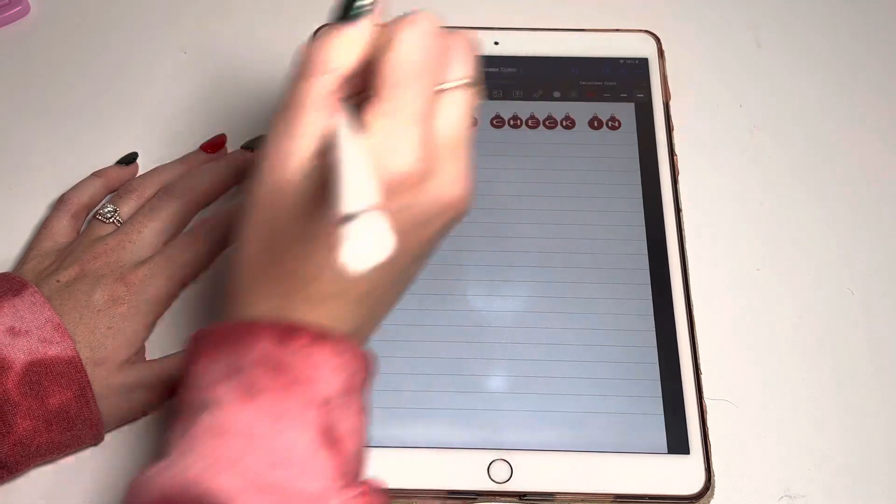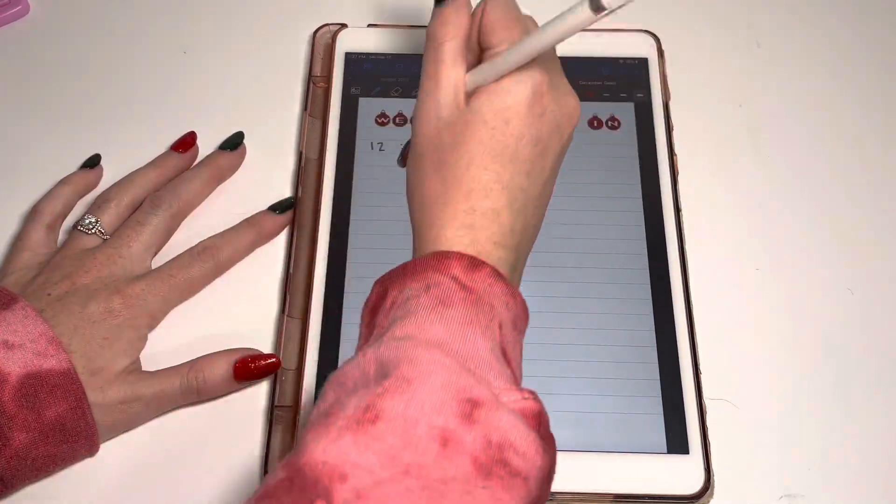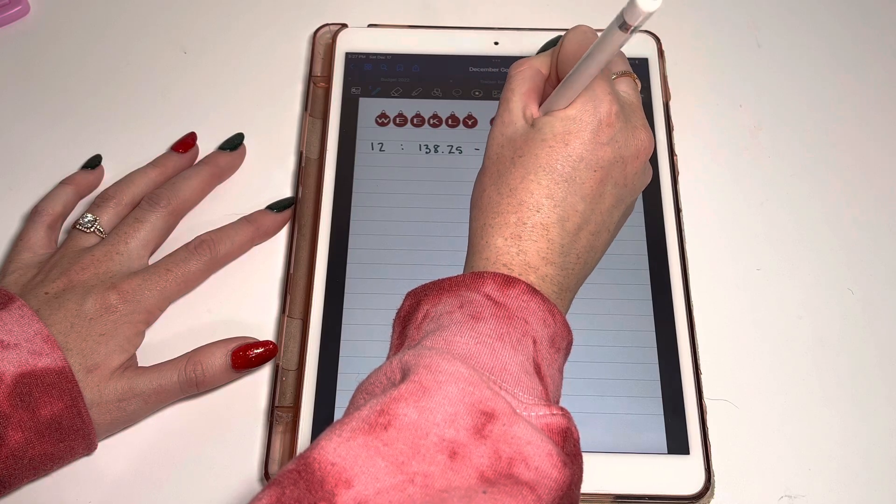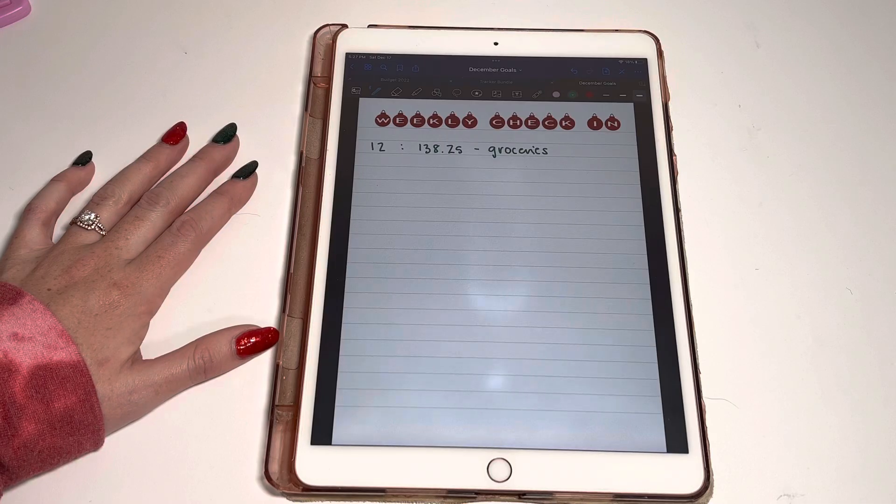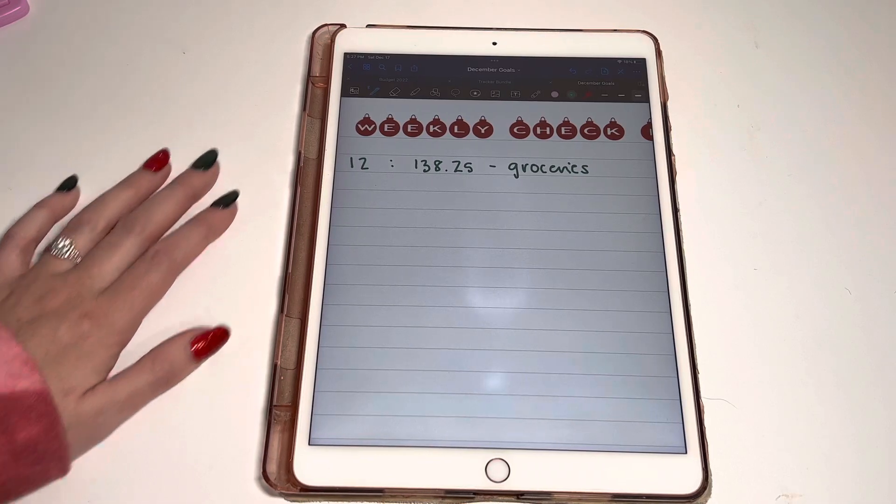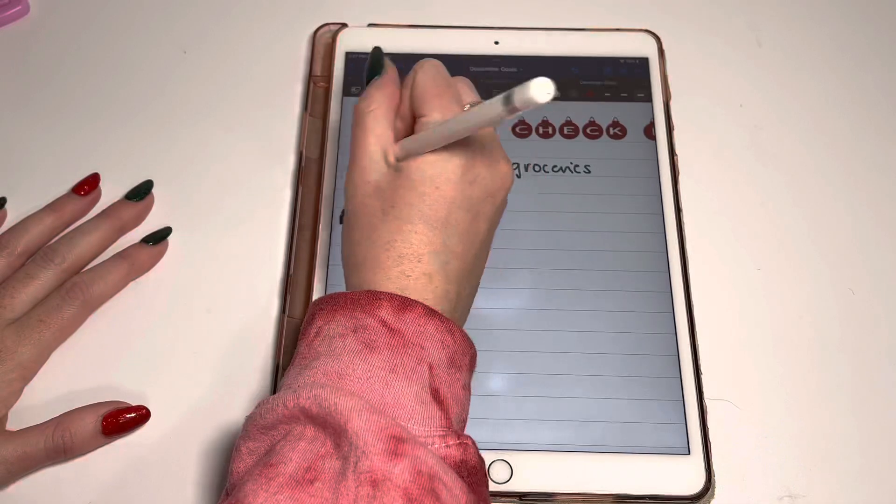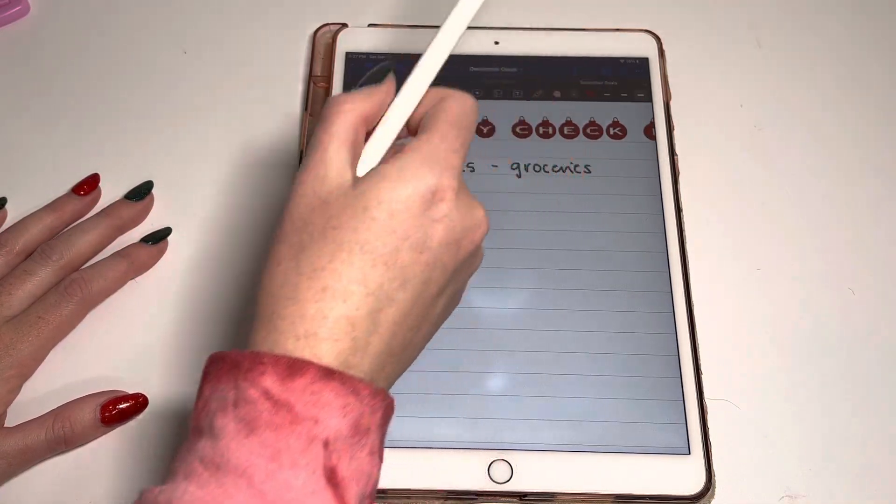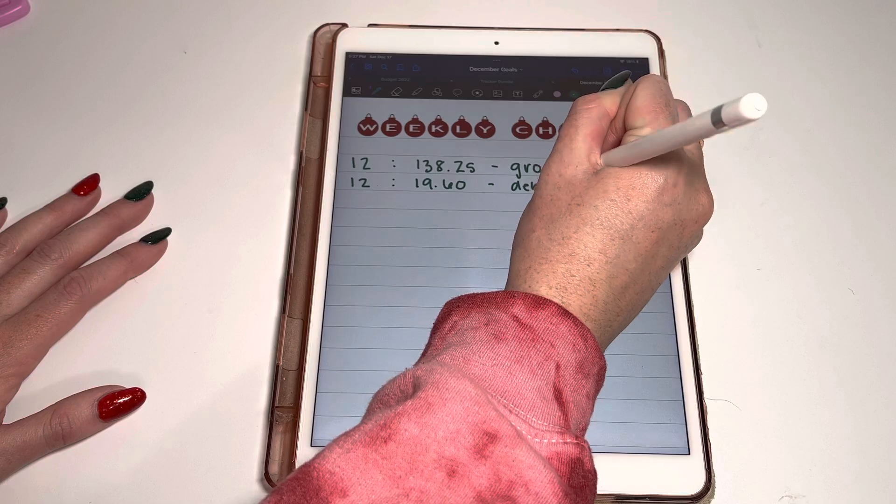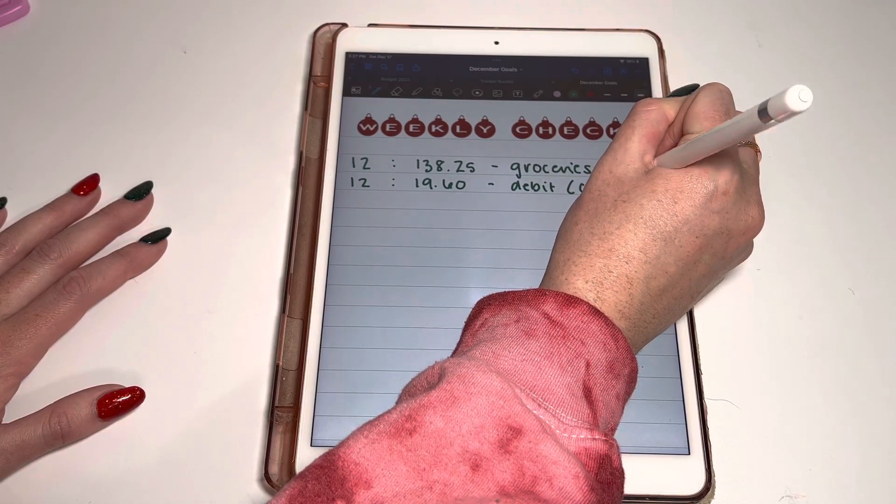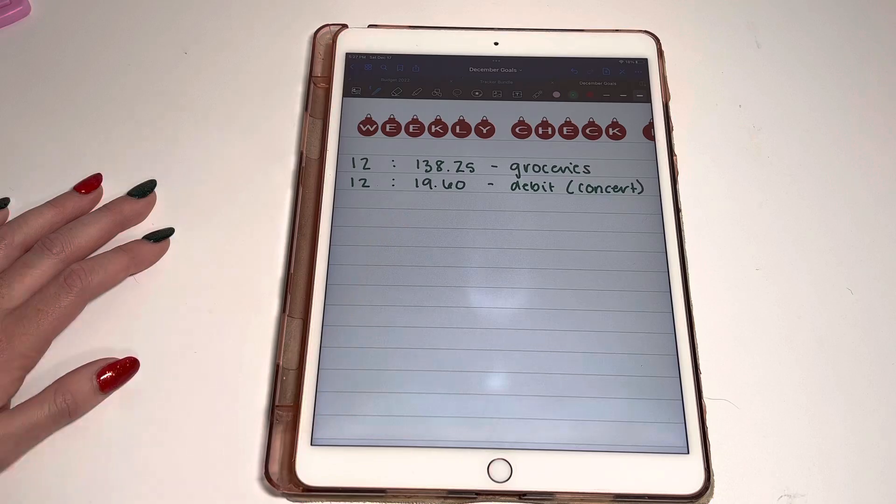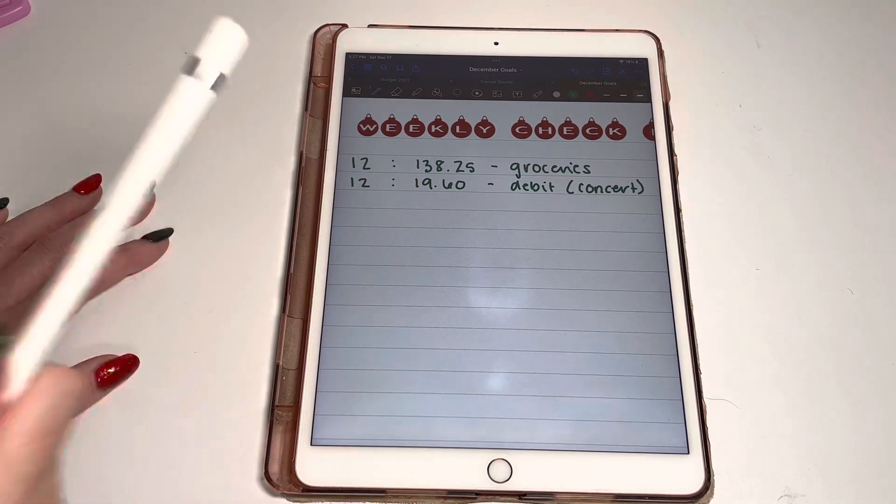On the 12th, I'm just gonna write the day because this is all December. We spent $138.25 on groceries, which I did talk about in my cash stuffing where I definitely overspent in this category. But you gotta do what you gotta do. There's nothing you can do about that. Also on the 12th, I spent $19.60 on my debit card for the concert. That was for one drink and a tip. That is why we don't go out, folks.